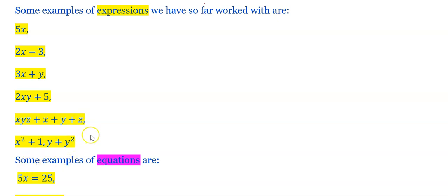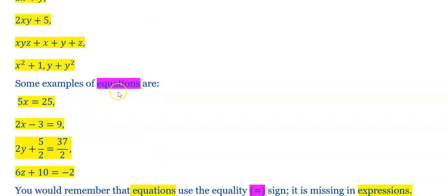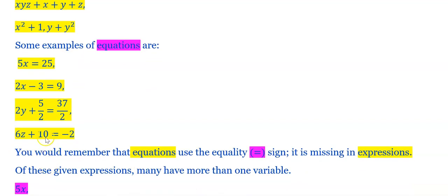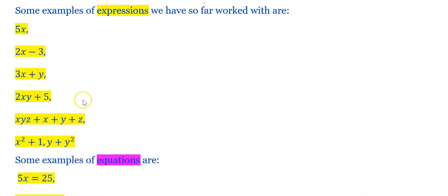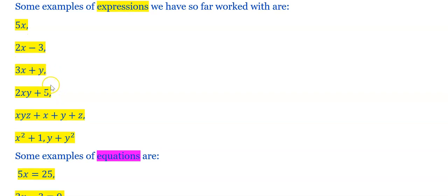These are the expressions. Now we will see the equations. Some examples of equations are: 5x equals 25, 2x minus 3 equals 9, 2y plus 5/2 equals 37/2, and 6z plus 10 equals minus 2. You would remember that equations use the equality sign, which is missing in expressions — only the algebraic expression is there.